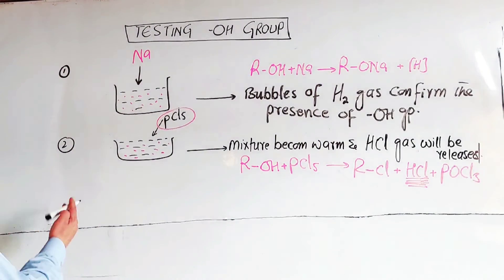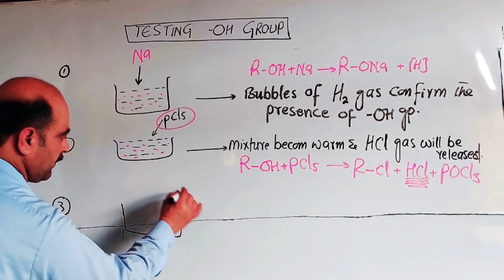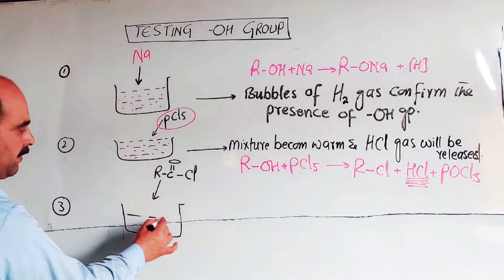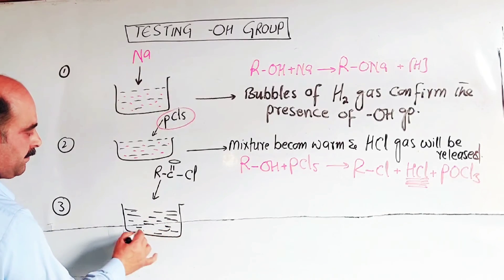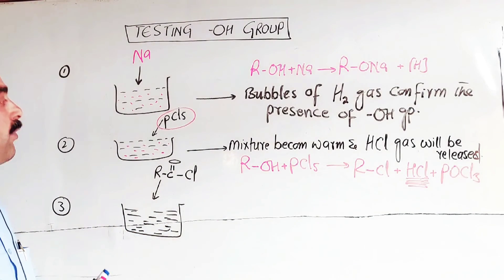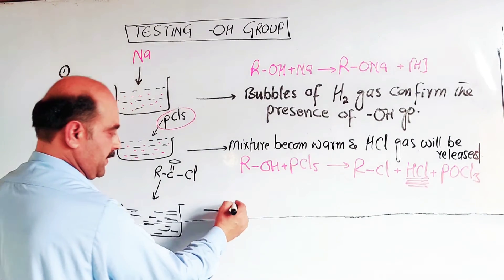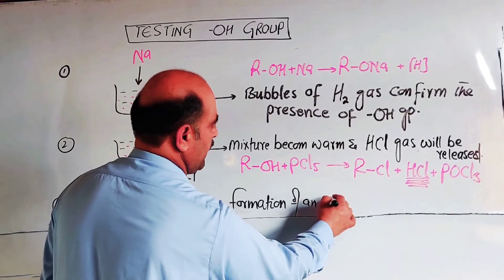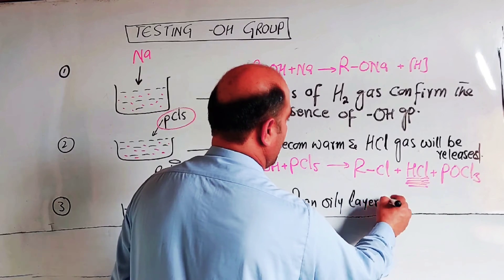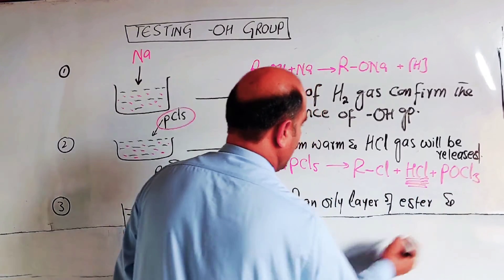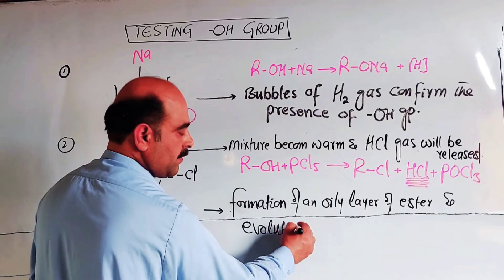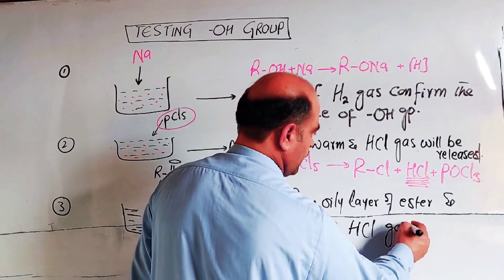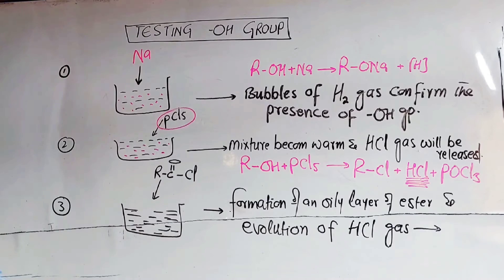For the third test, add acyl chloride (R-CO-X, where X is chlorine) to the given compound. Formation of an oily ester layer and evolution of HCL gas confirm the presence of the OH functional group. This means the given compound is an alcohol.